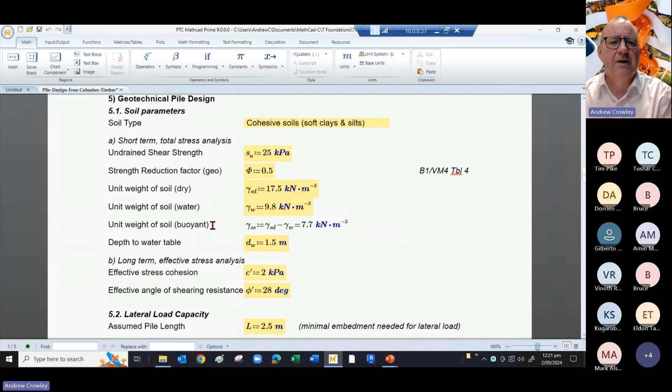For the short term, we're looking at an undrained shear strength Su of 25 kPa. We're using a strength reduction factor for our geotechnical analysis of 0.5. We've got unit weights for soil and dry.